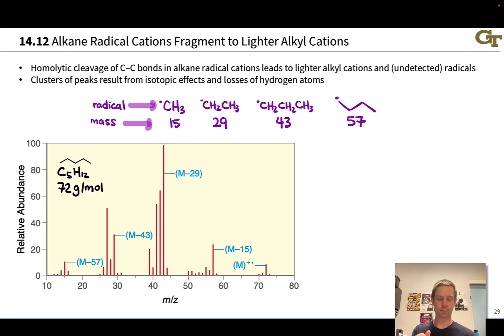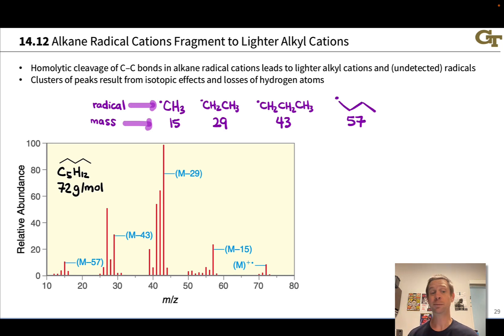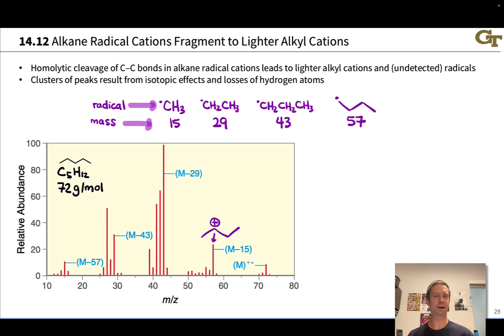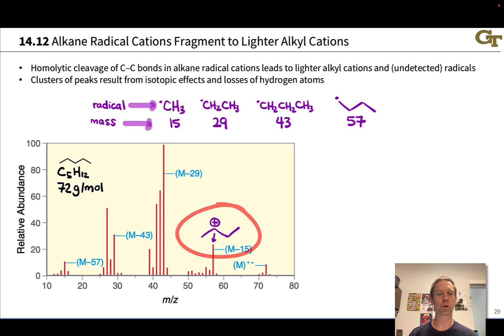This particular example shows the mass spectrum of pentane, C₅H₁₂. The molar mass is 72 g/mol, and we see the molecular ion right where we'd expect it at 72, but it's not the base peak. The base peak actually comes from fragmentation via loss of an ethyl group. At M minus 15, we have loss of a methyl radical, giving a butyl cation. I've drawn it secondary because this is the more stable cation, readily accessible via 1,2-rearrangement of the primary cation, but some four-carbon saturated cation shows up at this molar mass.